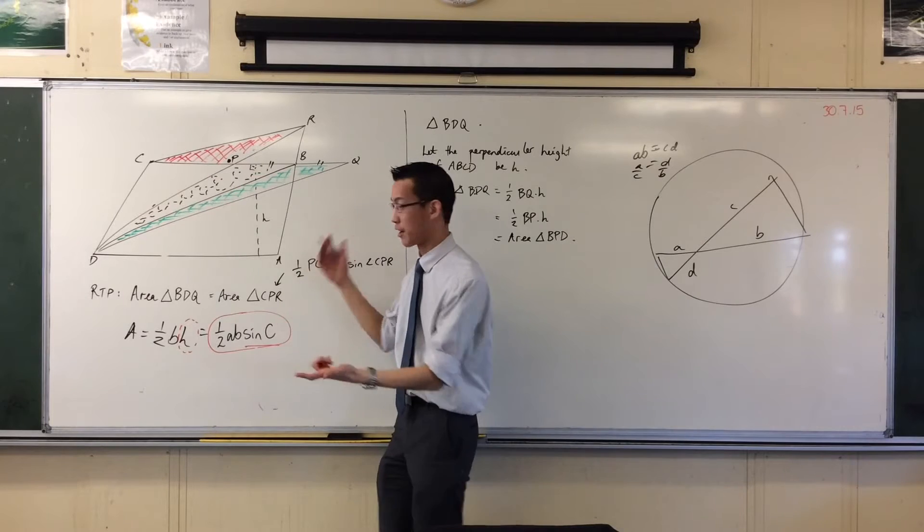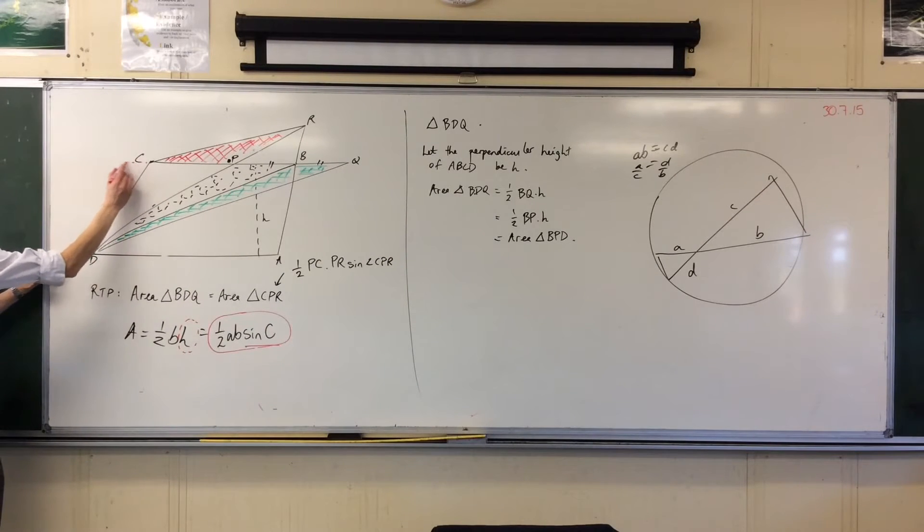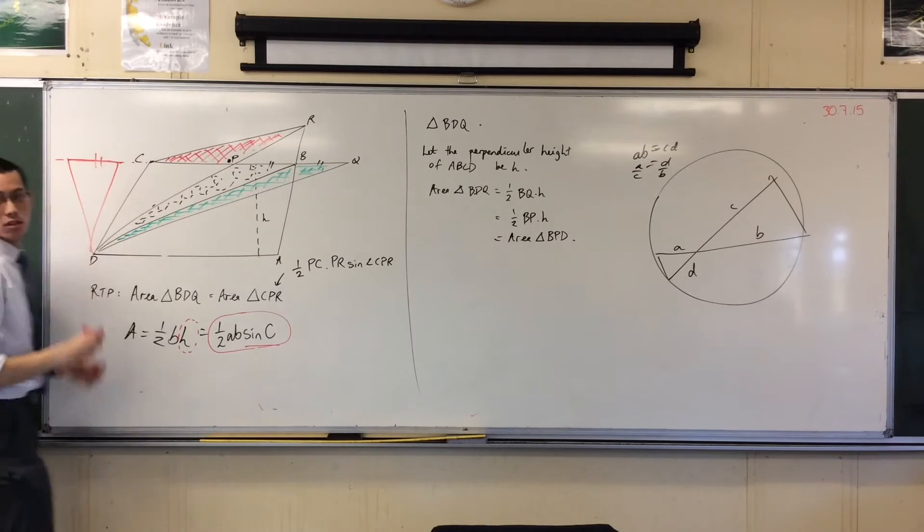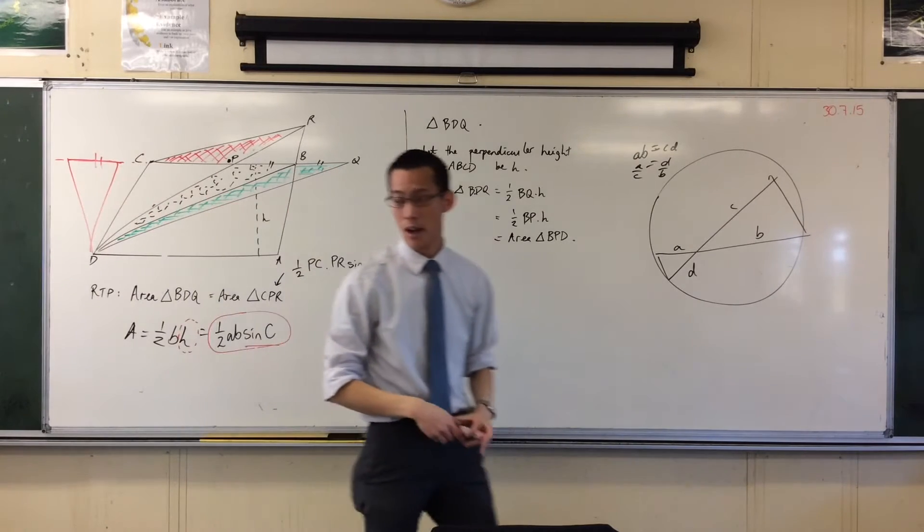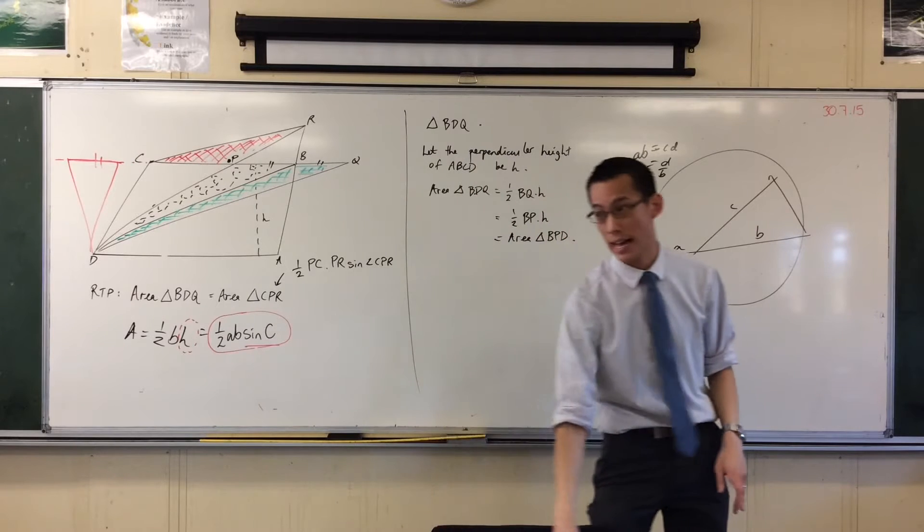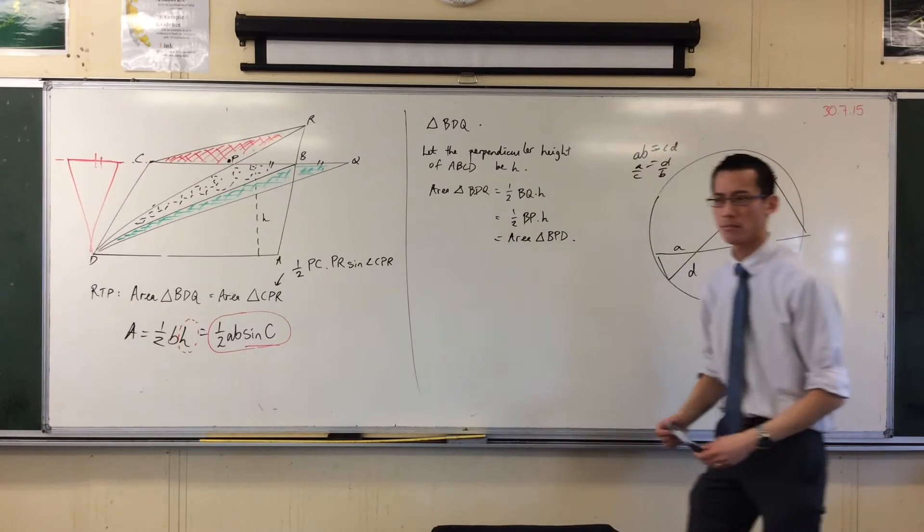And I could draw a triangle anywhere. I could draw one over here which had the same base, it's got the same height, so it would also have the same area. I can slide that base anywhere I like, and its perpendicular height is preserved. Is that okay?